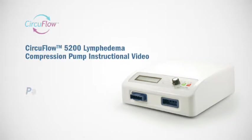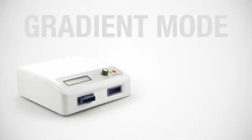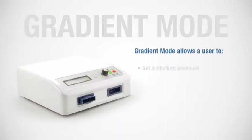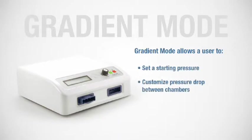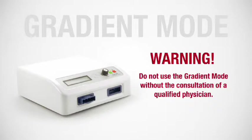The CircuFlow 5200 can be used in gradient mode based on specific parameters determined by the physician. The user can set a starting pressure and the percentage drop of pressure between chambers. This mode also allows for the skipping of pressure in a chamber to avoid an ulcer. Please consult the physician before modifying any parameters of the patient's treatment. Only a qualified physician can make suggestions to the pressure settings.